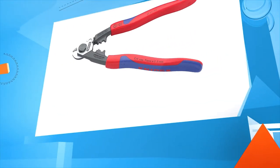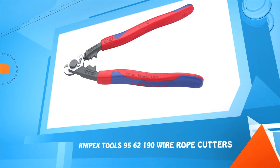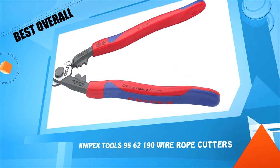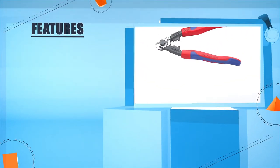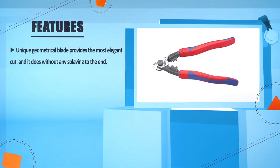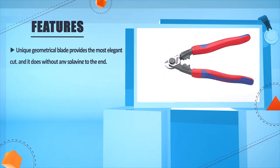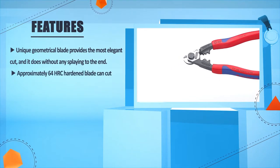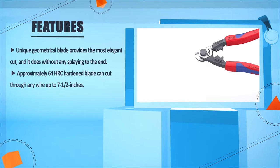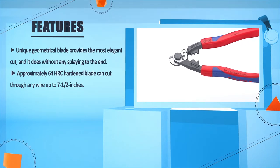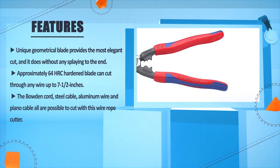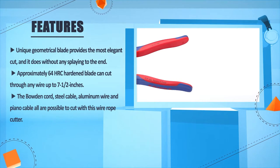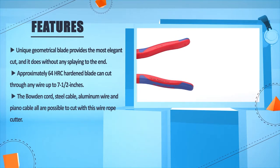Number 1: Knipex Tools 95-62-190 Wire Rope Cutters. Unique geometrical blade provides the most elegant cut and it does without any splaying to the end. Approximately 64 HRC hardened blade can cut through any wire up to 7 1/2 inches. The Bowden Cord, Steel Cable, Aluminum Wire, and Piano Cable all are possible to cut with this wire rope cutter.